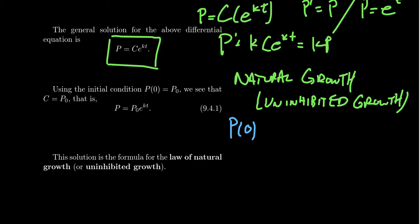this equals C times E times K times 0. K times 0, of course, will be 0. E to the 0 is equal to 1. And so we're going to see that C is equal to this initial value, P naught.